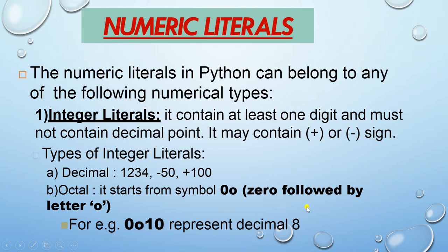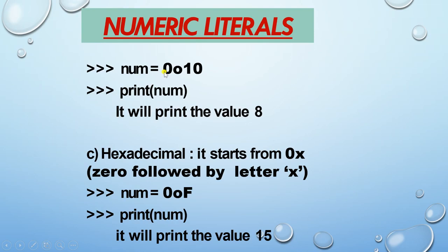If you print octal value '0o10', it will give you the answer 8. Next is hexadecimal, which starts with '0x'. For example, num = 0xF — here F represents 15 in hexadecimal. When you print num, it will give you the value 15.